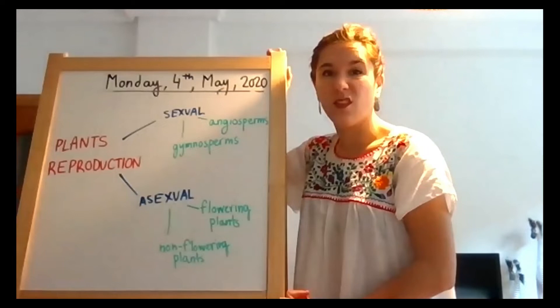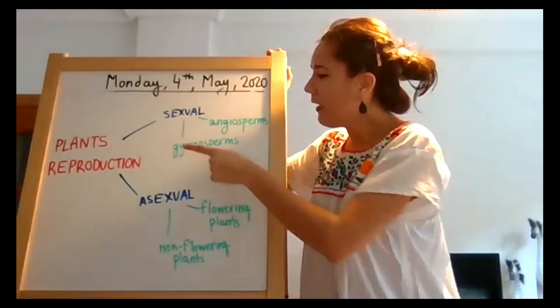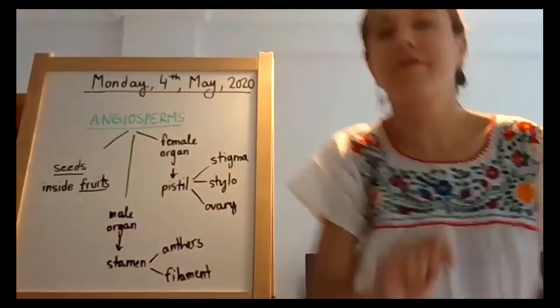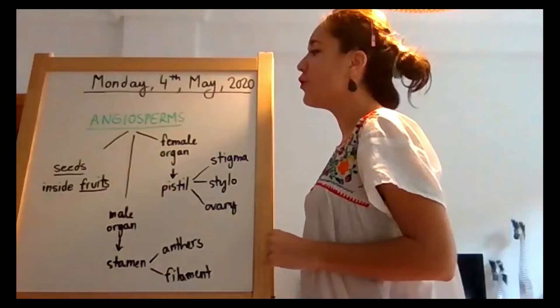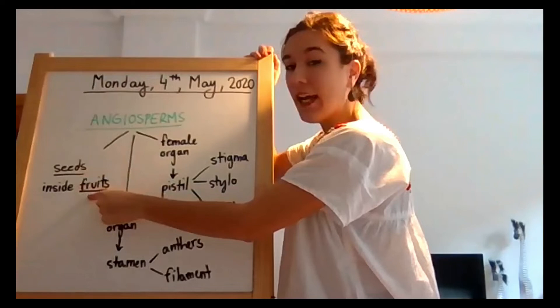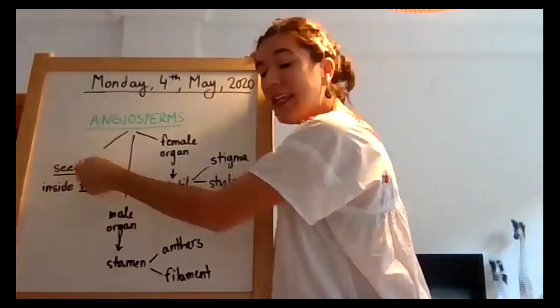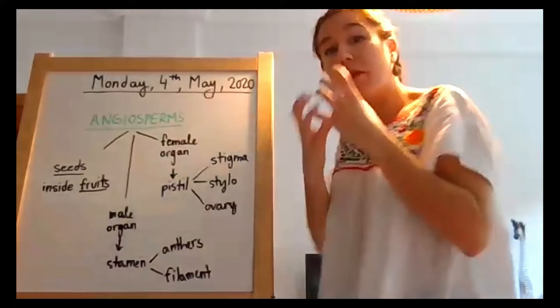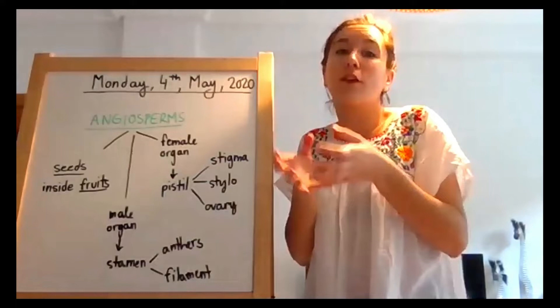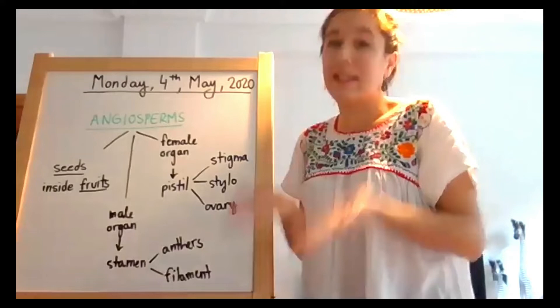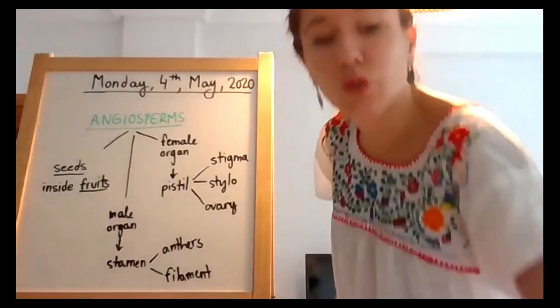The other day we explained angiosperms; today we are going to explain gymnosperms, and in the next lesson I'll explain both flowering and non-flowering plants together. Let's remember angiosperms: they develop seeds inside fruits. For example, if you open an apple you can see seeds inside — the apple tree is an angiosperm.